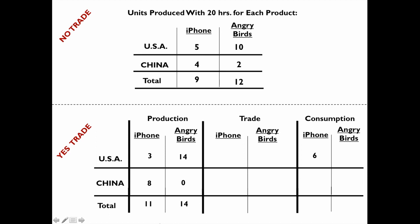I'm going to take the two extra ones that the world produces now with trade and give one to the US and one to China. The US was consuming 5 iPhones before, now it's going to consume 6. China was consuming 4 iPhones before, now it's going to consume 5. That totals 11. For Angry Birds: we're producing 14 instead of 12. The US was consuming 10 Angry Birds before, now they're going to consume 11. China was producing and consuming 2 Angry Birds before — give them one extra, that's 3. The world is better off with 14 total versus before.